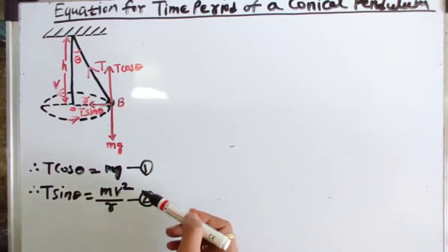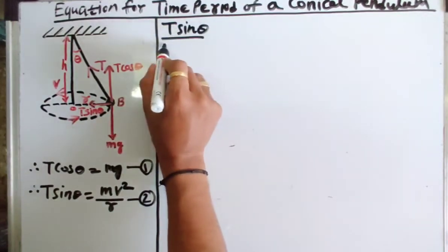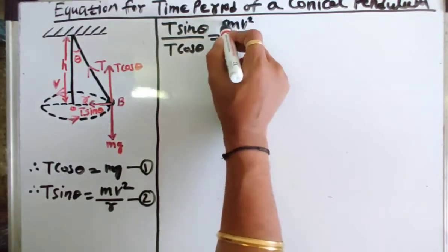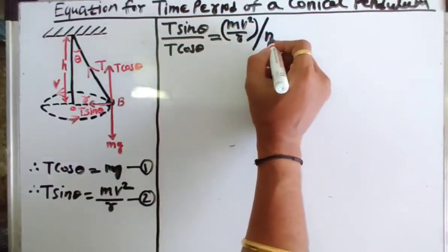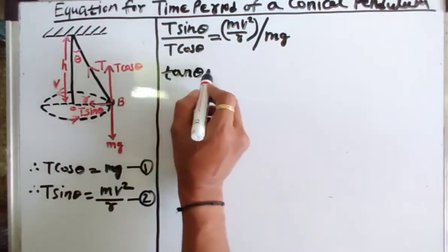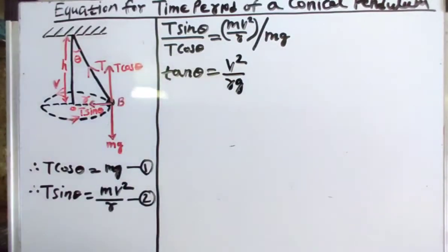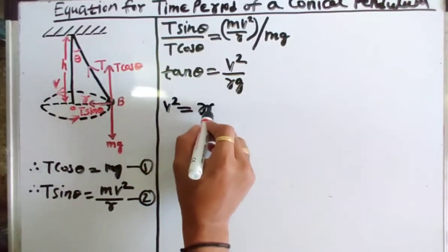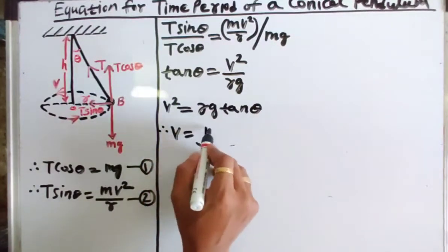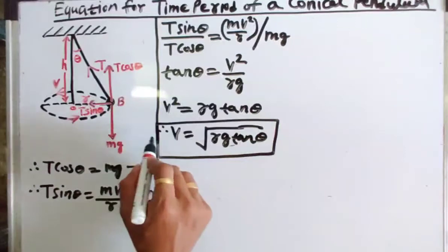Dividing equation 1 by equation 2, we write T sinθ / T cosθ = (mv²/r) / mg. The T cancels, giving tanθ = v²/rg. Therefore v² = rg tanθ, and taking the square root, v = √(rg tanθ). This is the equation for the linear speed of the bob performing circular motion in the horizontal plane.